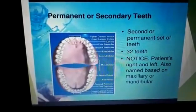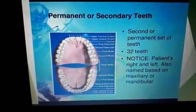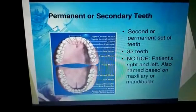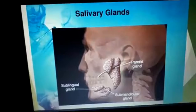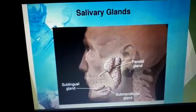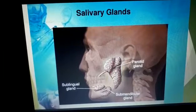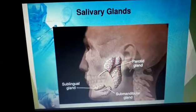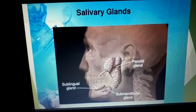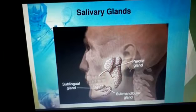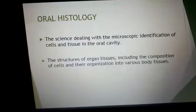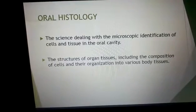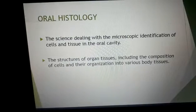The patient's right and left can be identified based on the maxillary or mandibular tooth. The salivary glands are glands in the oral cavity — there are three: the parotid gland, the submandibular gland, and the sublingual gland. Oral histology is the science dealing with the microscopic identification of cells and tissues in the oral cavity.